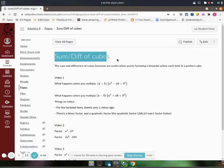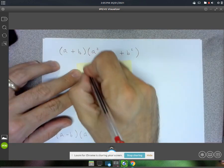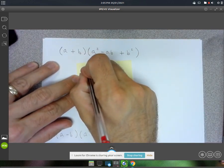We're going to look at the sum and difference of cubes formula. You probably remember the difference of squares formula. The difference of squares went something like this.